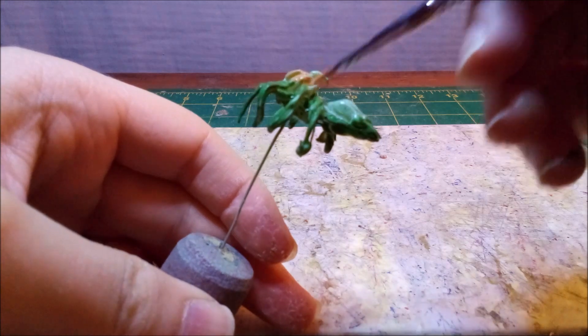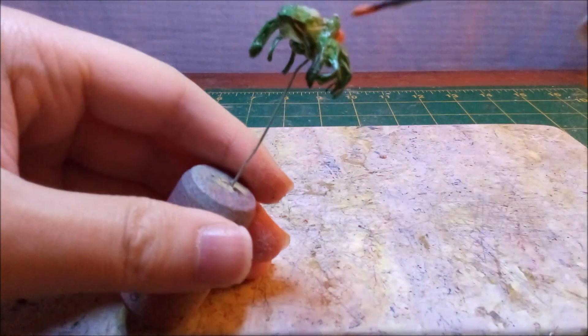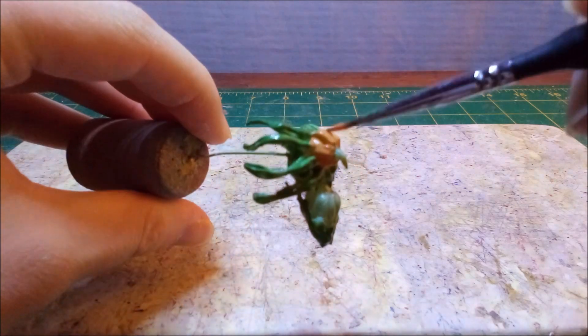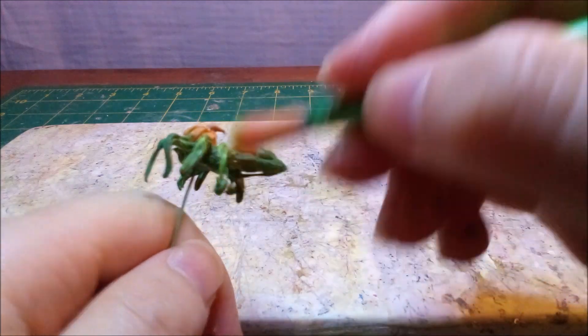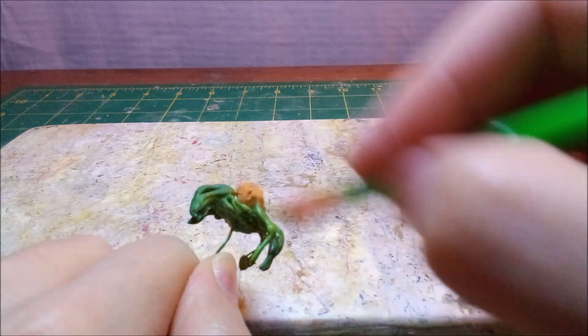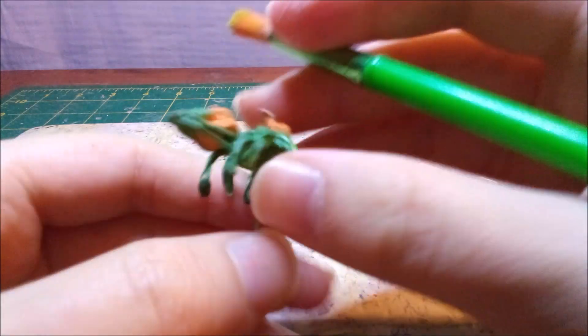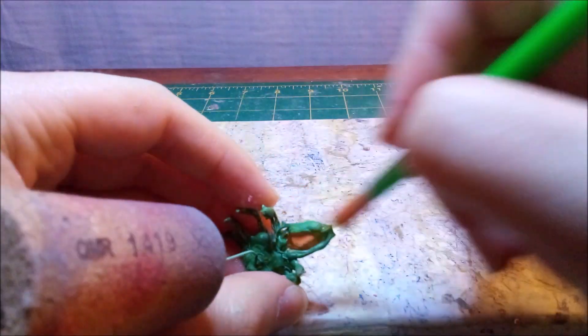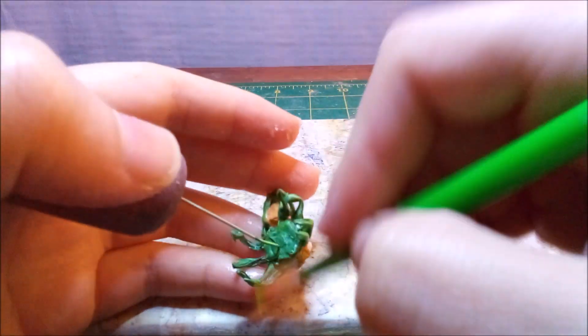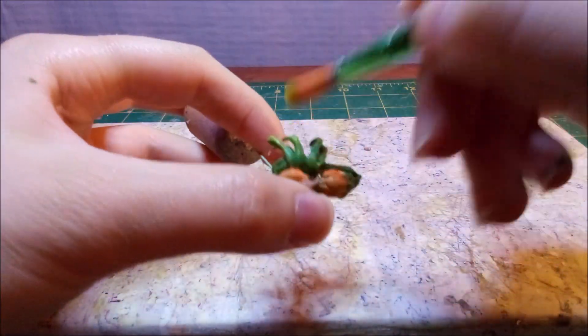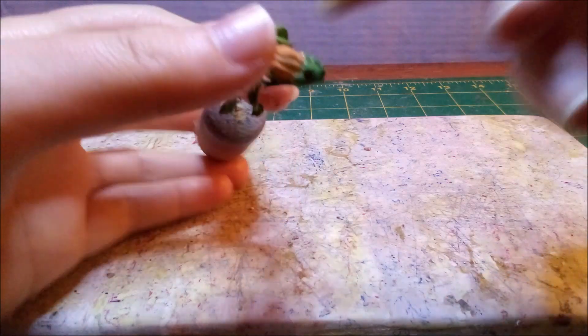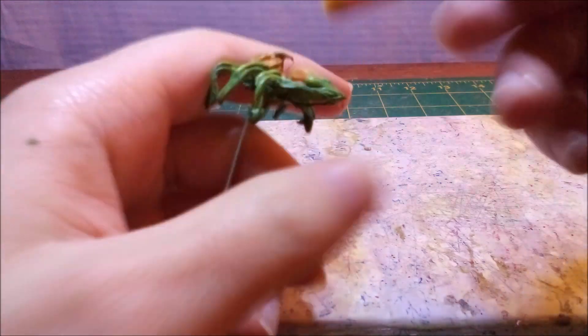After the base coat dries, I give the vines a light green dry brush. Dry brushing is a great technique to bring out detail and texture, however it's not the most precise thing. Once I'm done with the green, I dry brush everything with a gold yellow. It helps highlight the lighter green and brings out the texture on the orange.